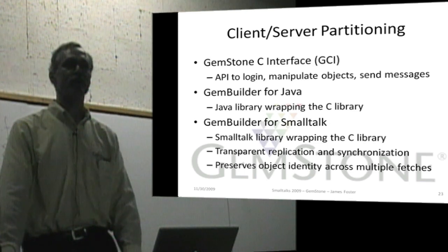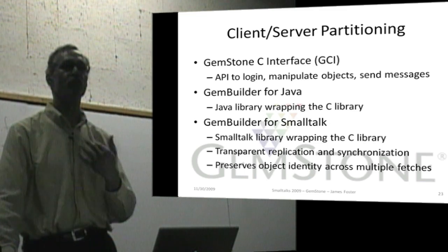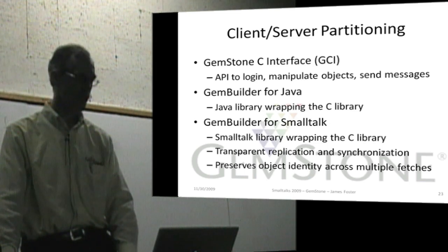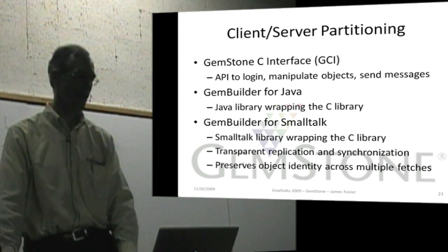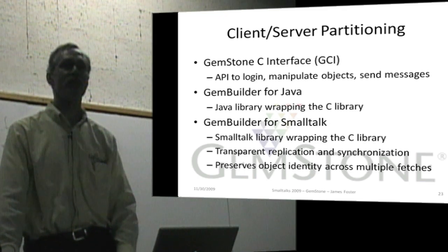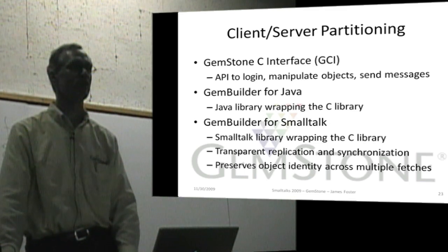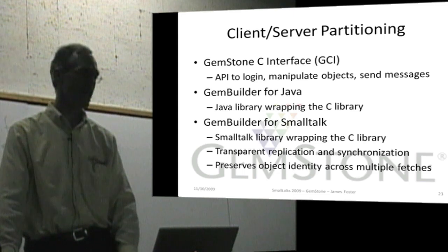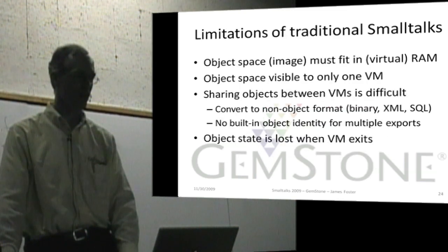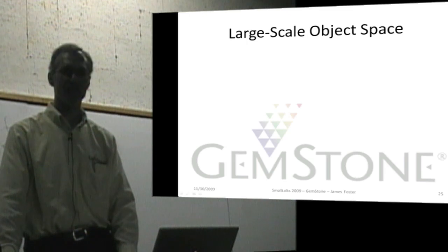Identity is preserved across multiple fetches — so if you happen to replicate the same object twice, it will have the same identity when it's loaded into your client Smalltalk environment. In addition to these client systems, you can program directly in GemStone using GemStone Smalltalk, so you don't need to use a client Smalltalk to access it. Traditional Smalltalk has limitations where you need to fit inside RAM, there's only one VM, and the object state is not persistent.